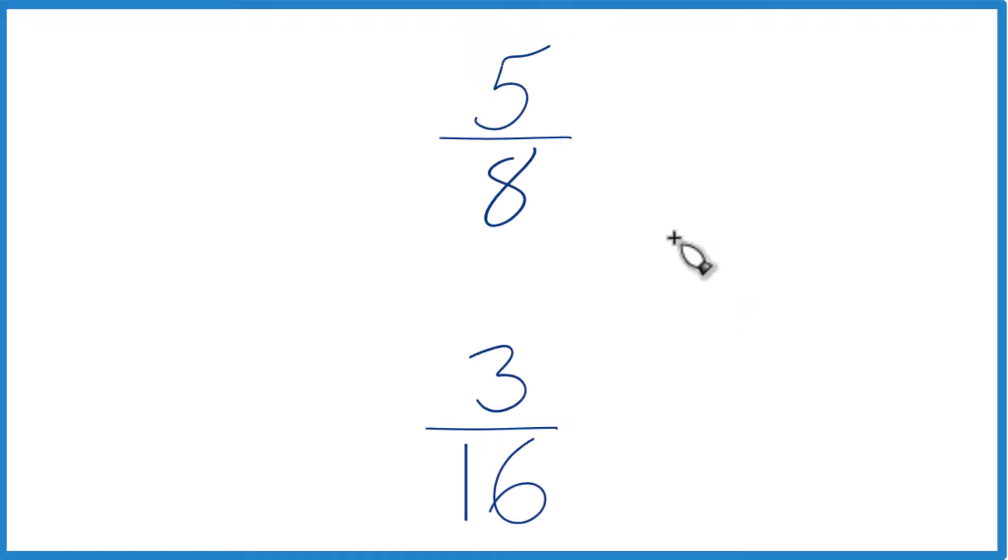You could start by just taking a calculator. 5 divided by 8, you get a decimal. 3 divided by 16, you get a decimal. And you could compare the decimals, see which one's larger, 5 eighths or 3 sixteenths.